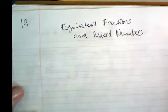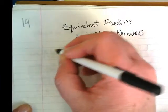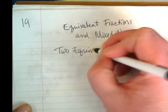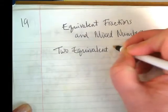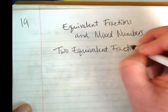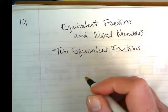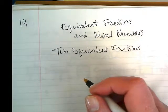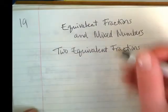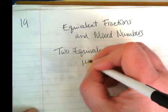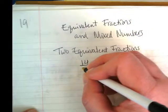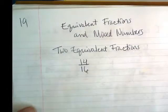Okay, we're going to start with finding two equivalent fractions. The fraction we're starting with is 14 sixteenths or 14 over 16.